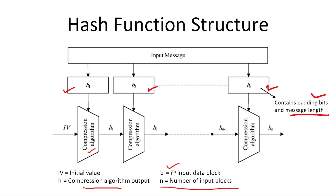We split our input message into n input blocks, where Bi is a specific input data block. The heart of the hash function is the compression algorithm, which is unique to each hash function and gives a fixed-length output. So h1, h2, hn-1, and hn all have the same size, defined by the hash function. The compression algorithm takes a data block as input along with the compression algorithm's output for the previous block. Since there is no previous output for the first block, we use an initial value whose size equals the compression algorithm output size, used as h0. The compression algorithm output for the last input data block is our hash value, which is hn.